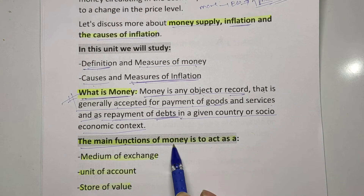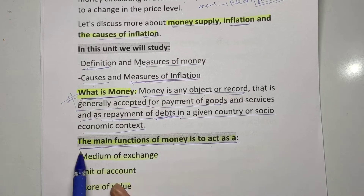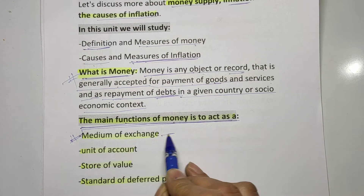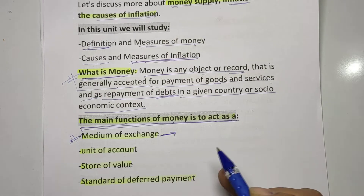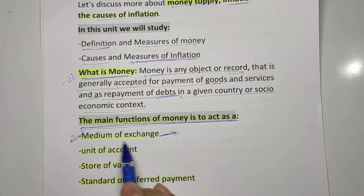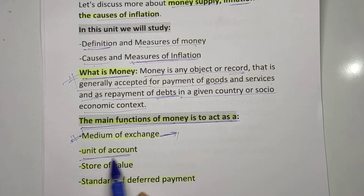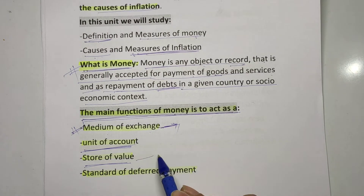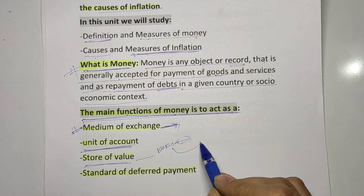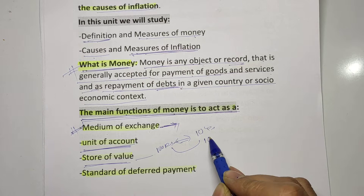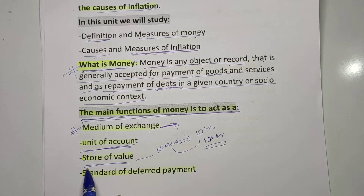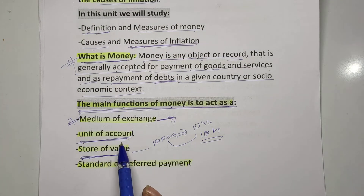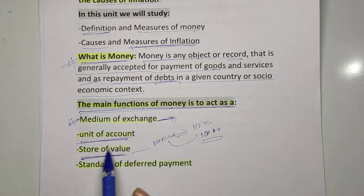The main functions of money: first, money acts as the medium of exchange — using money you can buy and sell goods. Second, money is a unit of account — money has a definite unit. Third, money is a store of value — if you have 100 rupees today, the value will remain 100 rupees after ten years.